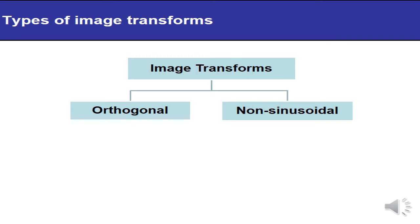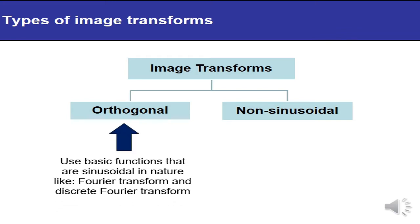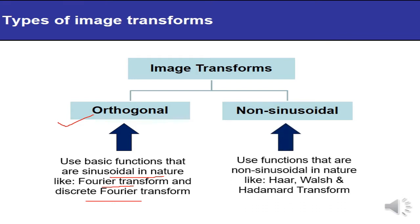There are two possible types of image transforms broadly categorized into two categories. One is image transforms based on orthogonal properties — these use basic functions that are sinusoidal in nature, like Fourier transform and discrete Fourier transform (DFT). The other is non-sinusoidal image transforms, which use functions that are non-sinusoidal in nature, like Haar, Walsh, Hadamard, SVD, and KL transforms. In the coming lectures, you will study both types in detail.